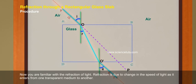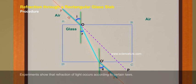Now, you are familiar with the refraction of light. Refraction is due to change in the speed of light as it enters from one transparent medium to another. Experiments show that refraction of light occurs according to certain laws.